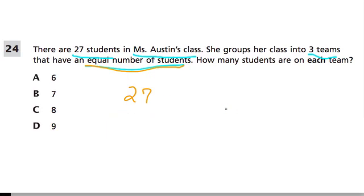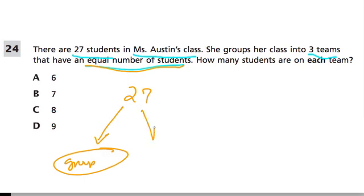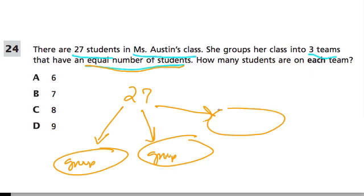That's really what this problem is about. You have 27 and you split them into one group, two groups, another group, and three groups. So how will you do this?